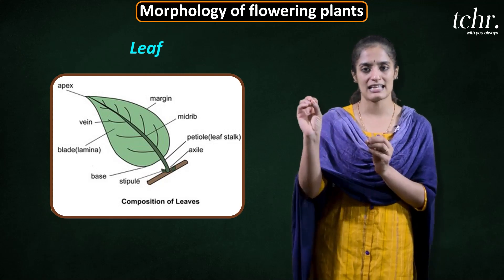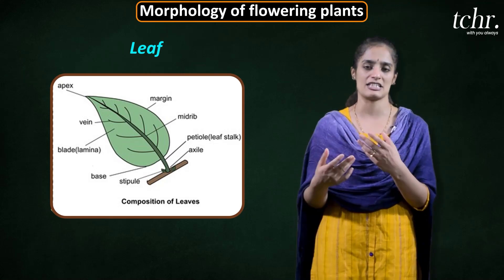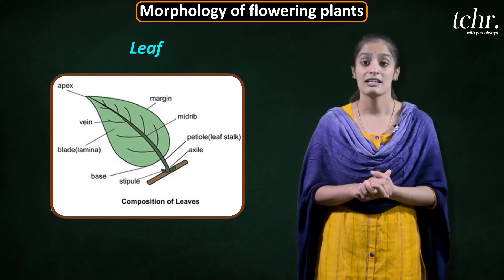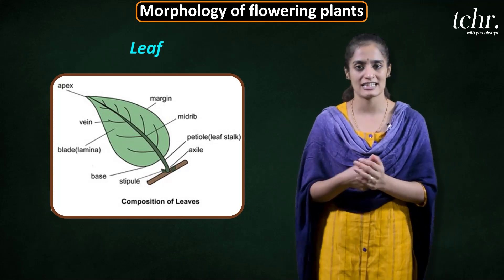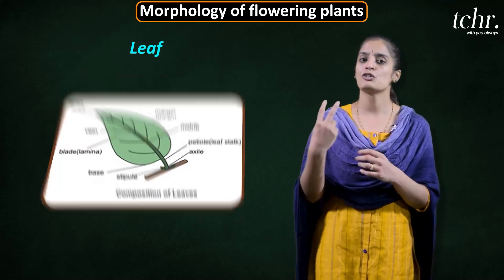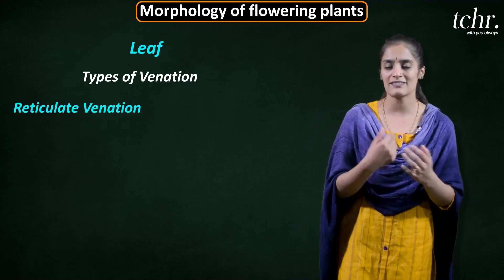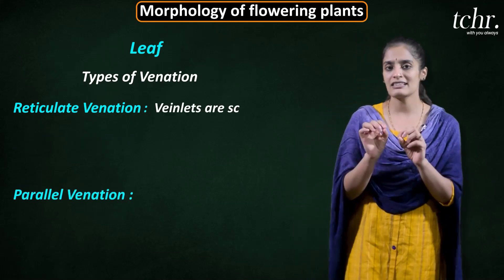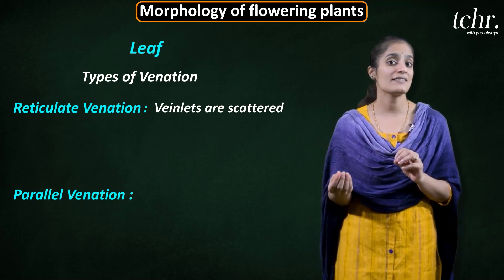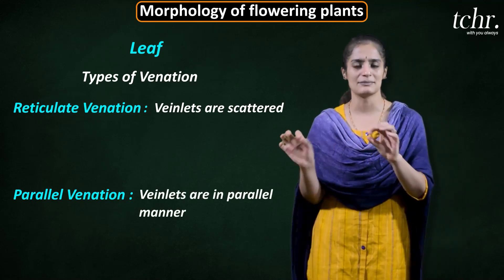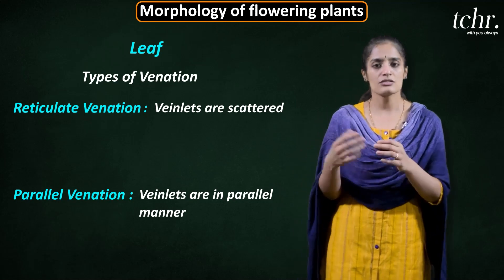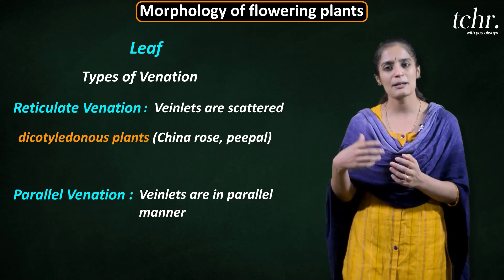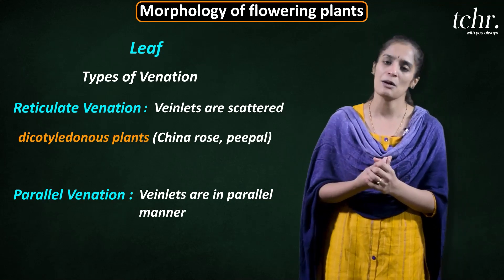The veins in leaves conduct water. Based on the vein arrangement, leaves are of two different types: reticulate venation, where the veins or veinlets are scattered, and parallel venation, where the veins are arranged in a parallel manner. Reticulate venation is observed in dicots, and parallel venation is observed in monocots.